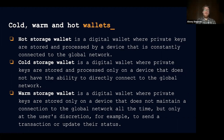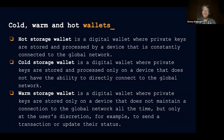As we move toward the end of this lecture, let's reiterate on cold, warm, and hot wallets from a slightly different perspective. A hot wallet is a digital wallet where private keys are stored and processed by a device that is constantly connected to the global network. A cold wallet is a digital wallet where private keys are stored and processed only on a device that does not have the ability to directly connect to the global network. A warm storage wallet is a digital wallet where private keys are stored on a device that does not maintain a constant network connection, but only connects when the user needs to — for example to send a transaction or update status.